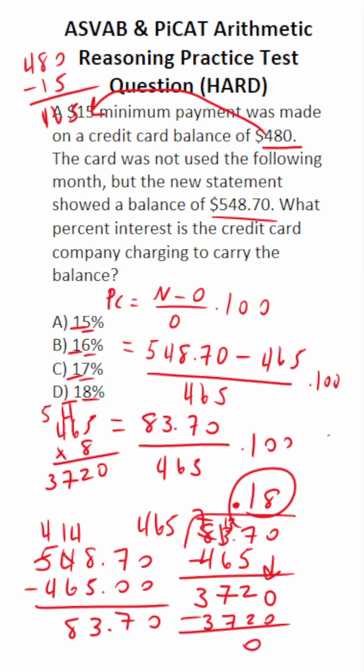Therefore, we know that this is going to be 0.18 times 100, that's the same thing as 18%. So this one is D, 18%. This is a very hard problem, very tedious. A lot of decimals and mental math to do in this one.